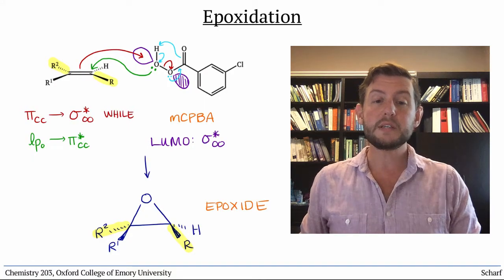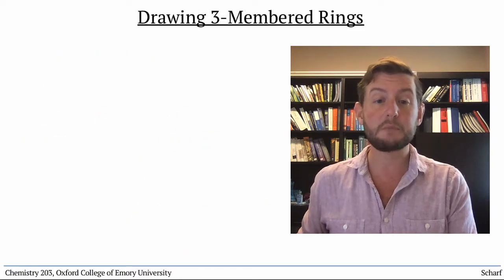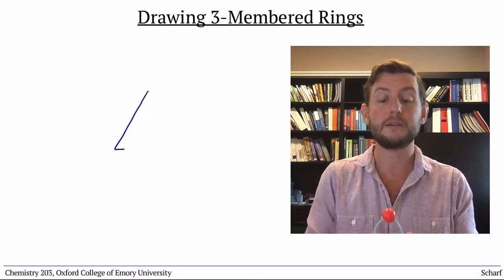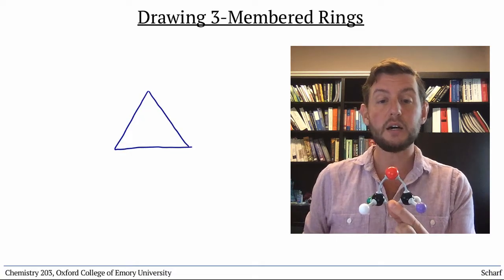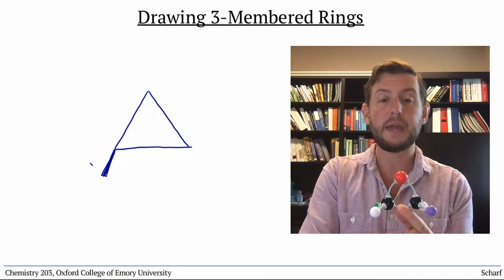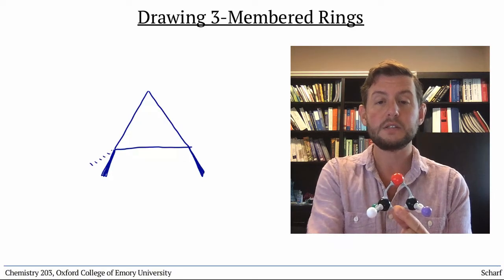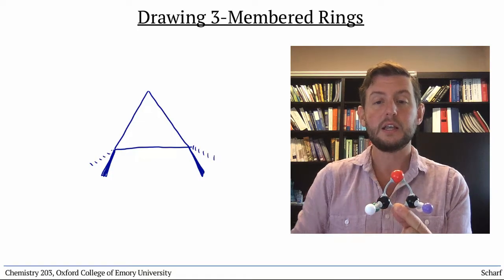This brings up an important point about drawing three-membered rings, like bromonium ions and epoxides. It's always clearest and most unambiguous to draw the three-membered ring flat on the page, with the substituents on each carbon on wedges and dashes, like this.